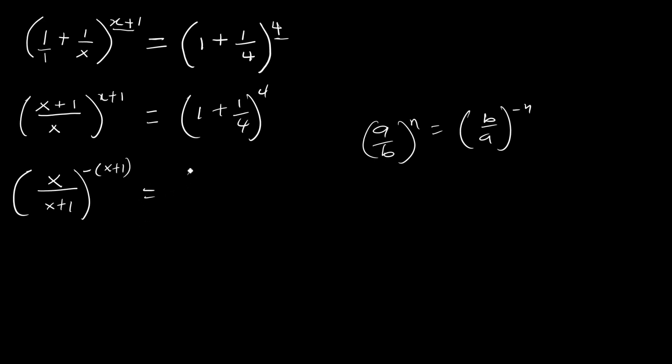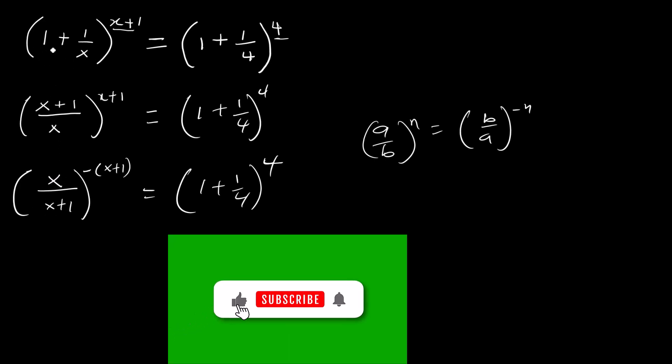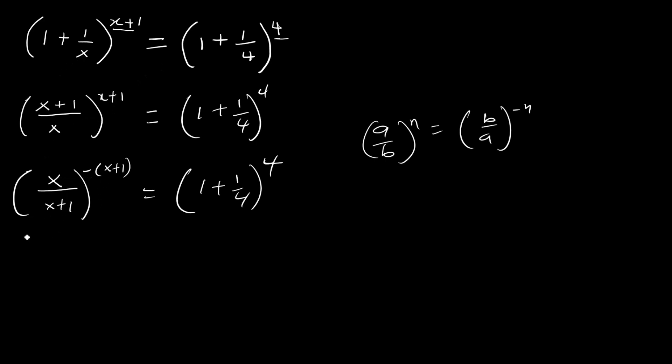Now let's write this one in such a way that we get one plus something, like the first one - one plus one over x. Here we are going to support the numerator.